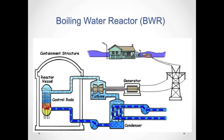The turbine shaft rotates the shaft of the generator, converting that mechanical energy into electric energy. The electric energy then runs along the transmission and distribution network to the end user. The water that was steam inside the steam turbine must be cooled and condensed, and then returned to the reactor vessel. The process for cooling that water requires a cooling tower or some kind of cooling water.